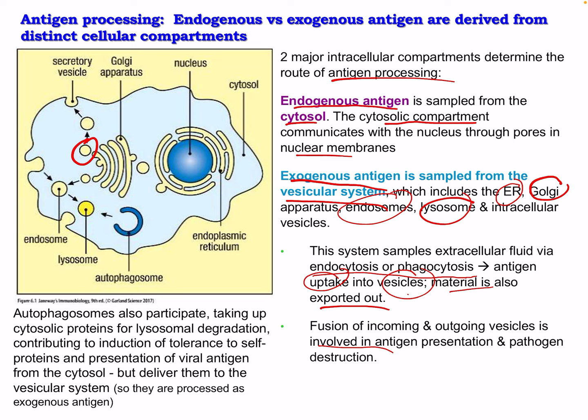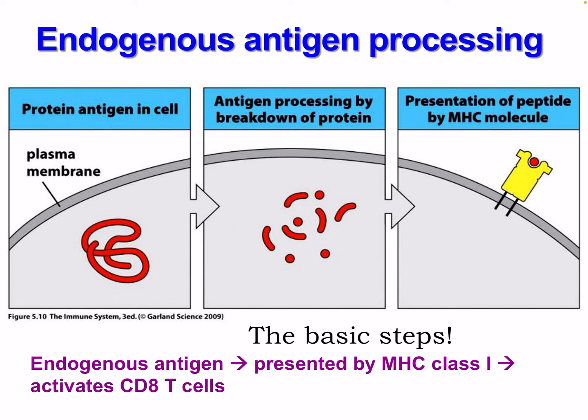Materials are also exported out, and fusion of incoming and outgoing vesicles is involved in antigen presentation and pathogen destruction. Autophagosomes also participate — these take up cytosolic proteins for lysosomal degradation, contributing to tolerance to self-proteins and presentation of viral antigens from the cytosol, but they deliver them to the vesicular system, so they are processed as exogenous antigens.